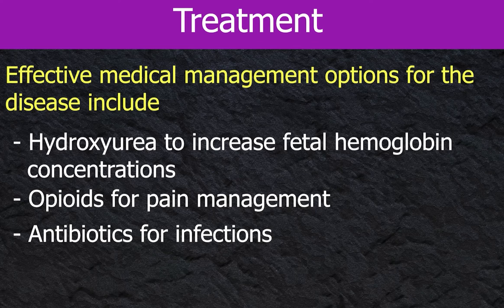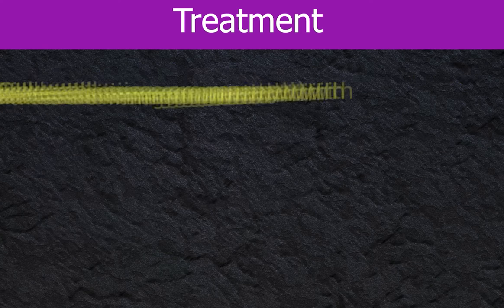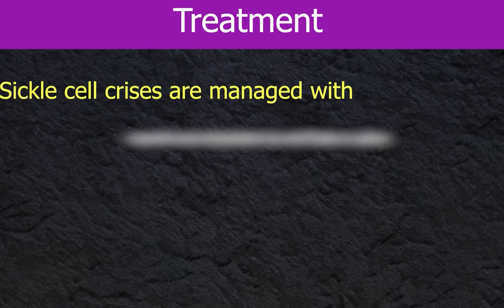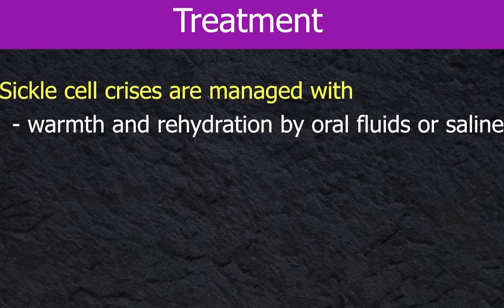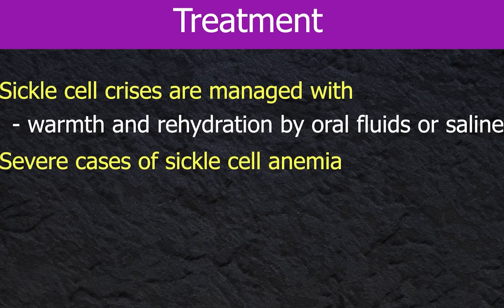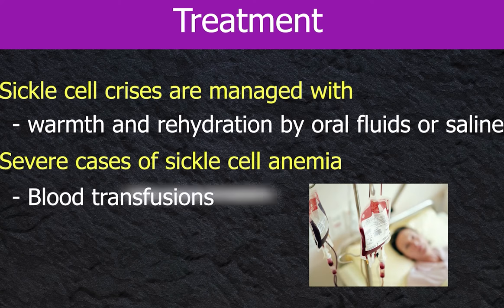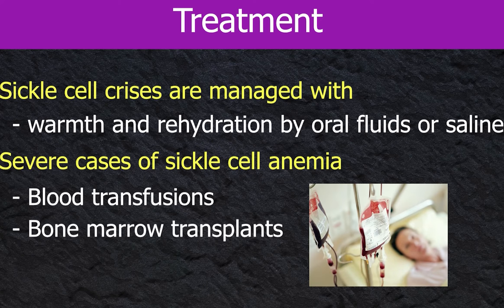Sickle cell crises are managed with warmth and rehydration by oral fluids or saline until they resolve. Severe cases of sickle cell anemia, however, might require blood transfusions or bone marrow transplants.